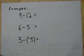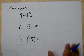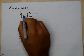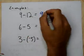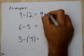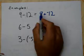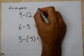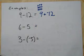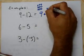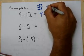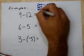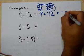Some examples. 9 minus 12. You can simply change that subtraction to adding the opposite. So instead of subtracting 12, I'm going to rewrite this as 9 plus the opposite, which is negative 12. We can think of it as 9 positives and 12 negatives. These guys go in and take each other away, and we end up with three negatives left.